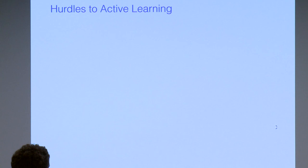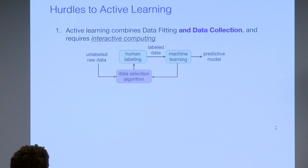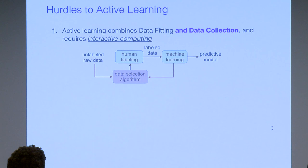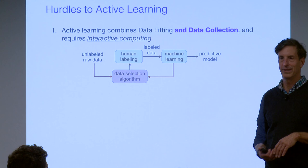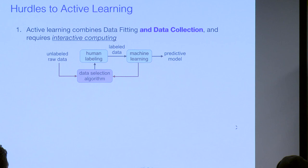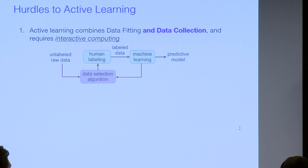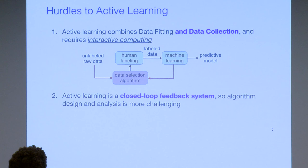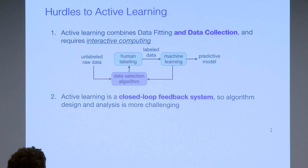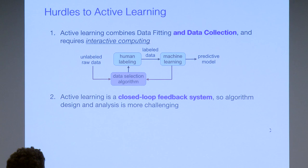Why won't we always do active learning then? There are some hurdles. One is that active learning basically combines data fitting and data collection, requiring some sort of interactive computing infrastructure. Normal machine learning means you download a dataset and test your algorithm. Here, building the dataset is part of the algorithmic process, so it's not easy to experiment and prototype algorithms in this domain.